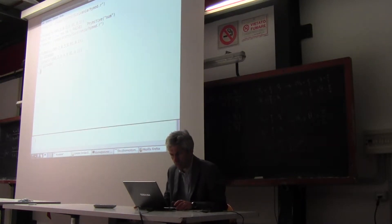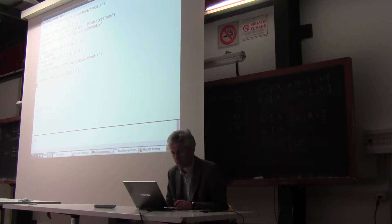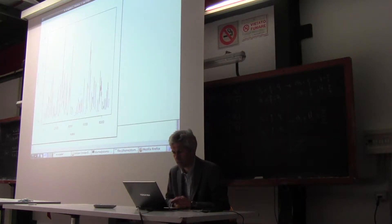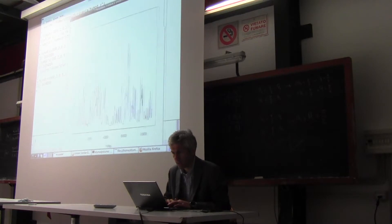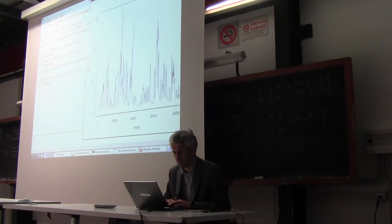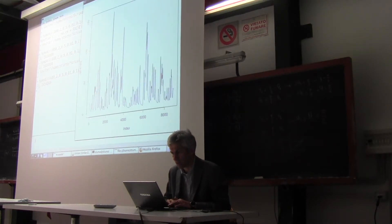Let me go back to R, source it again, and then I should get the graph. Here it is — perfect. I get the graph and the sum of squares.